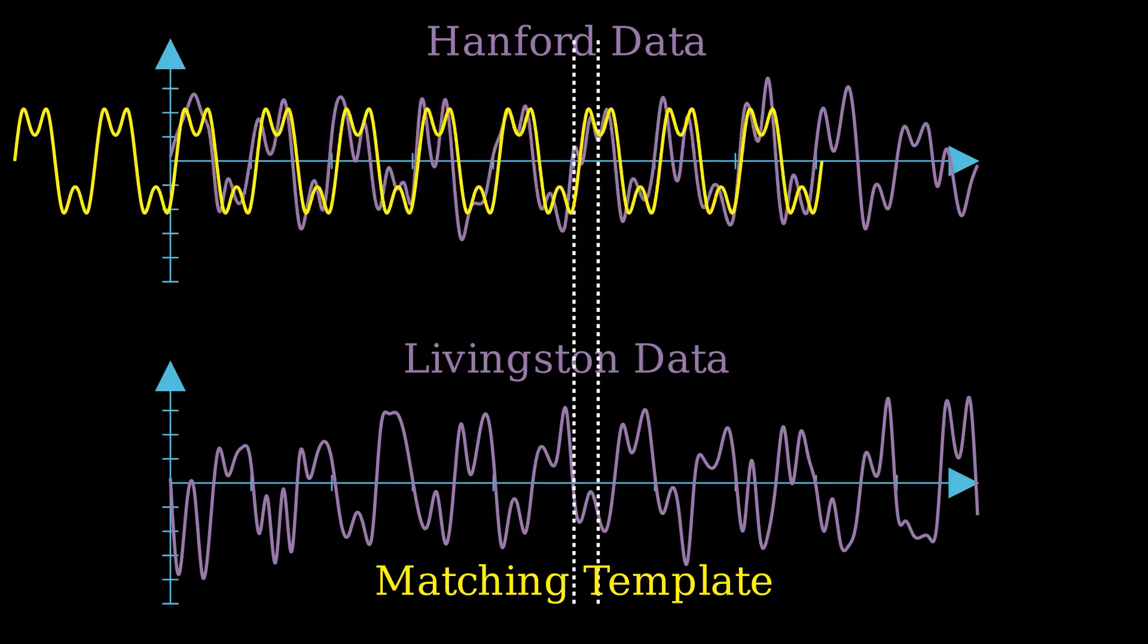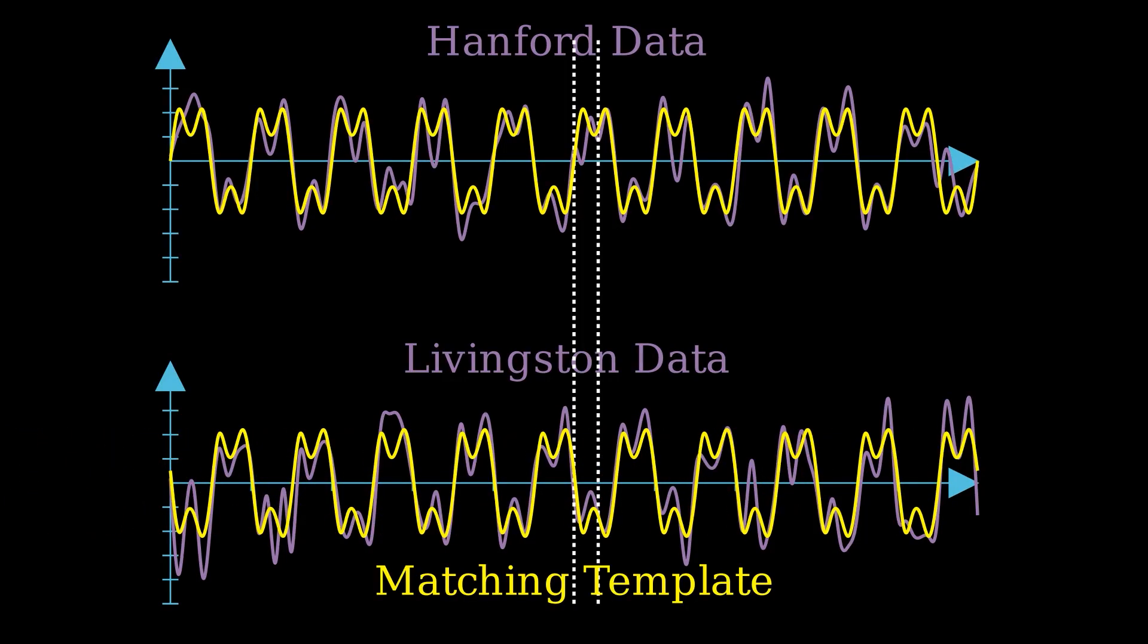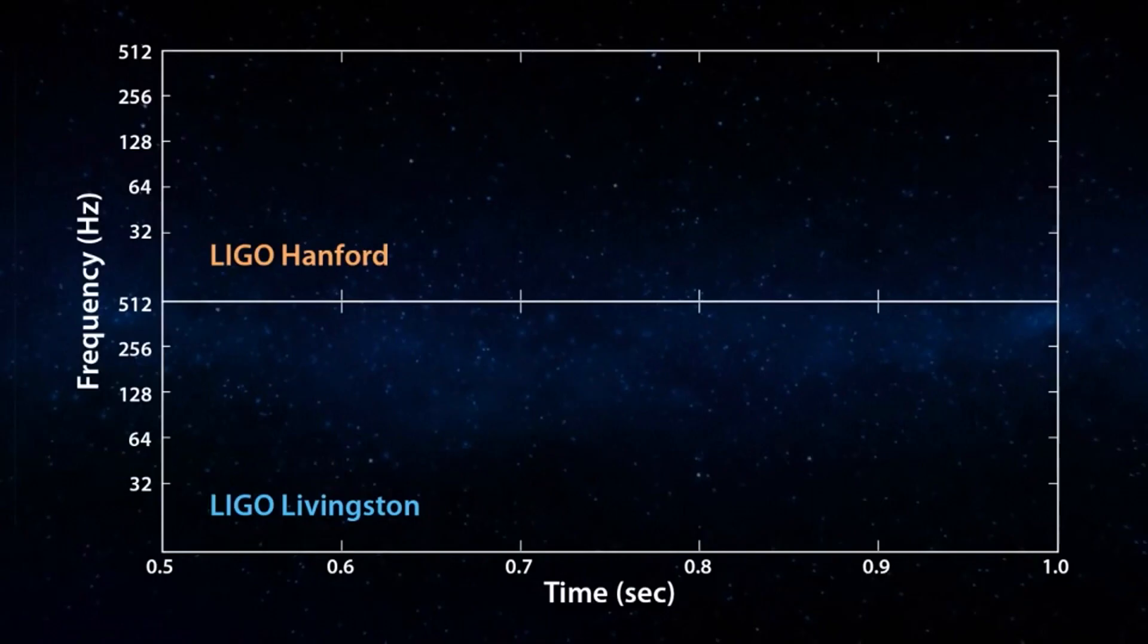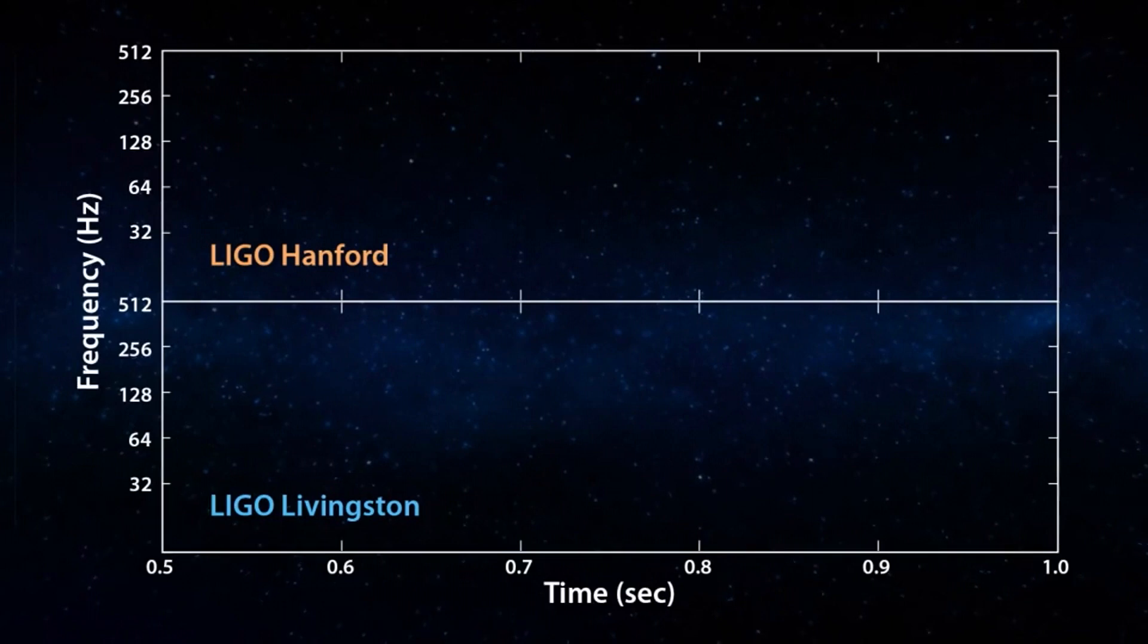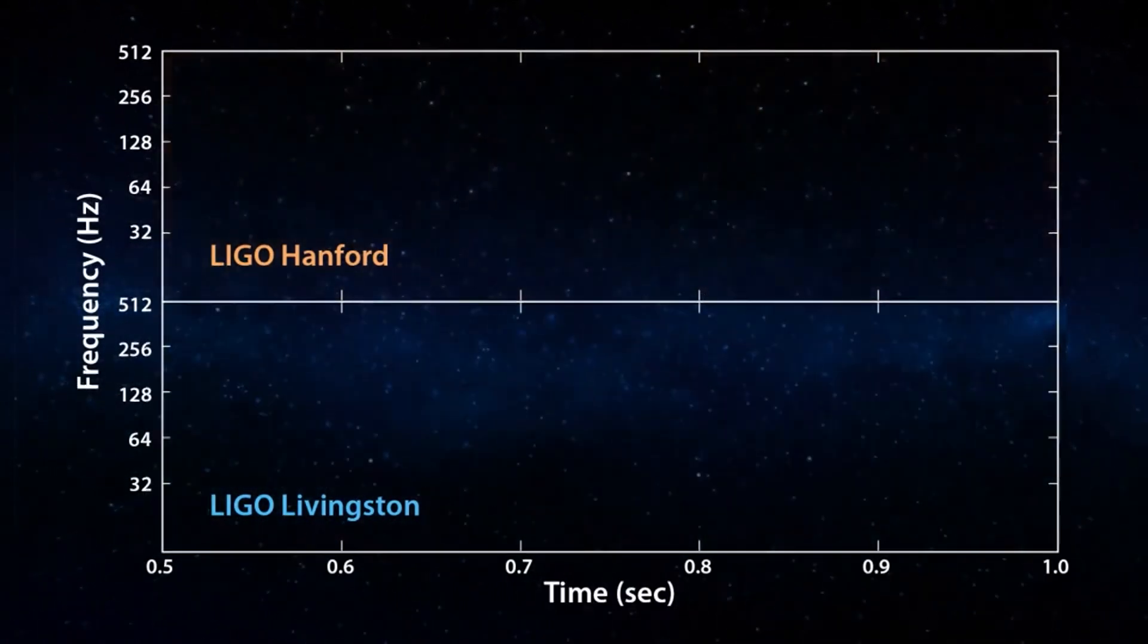This is because gravitational waves propagate through space at the speed of light, so they will hit the two detectors at a time predetermined by their distance from one another. If only one detector sees the signal, then it was probably caused by something local, like a small earthquake or someone dropping their hydro flask.